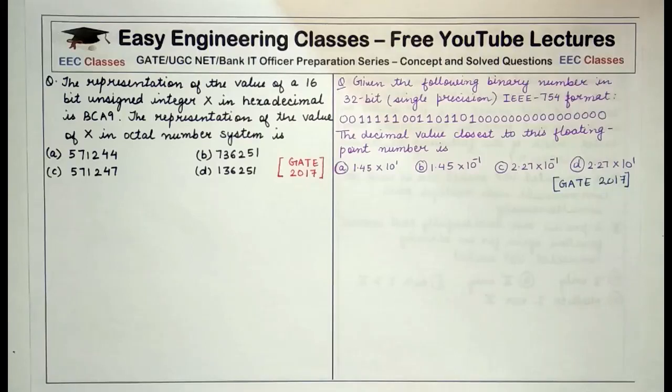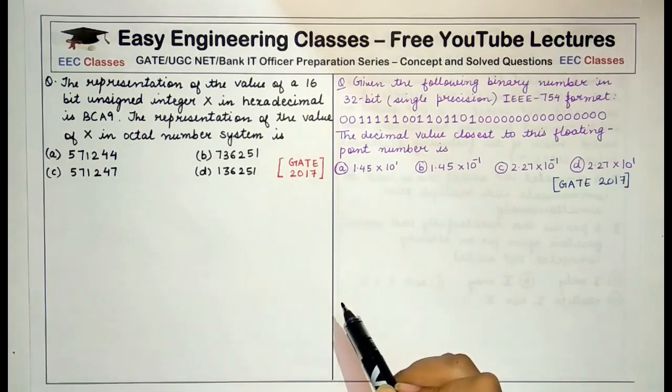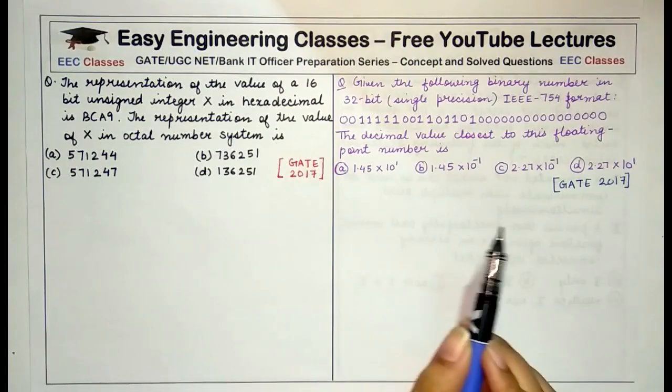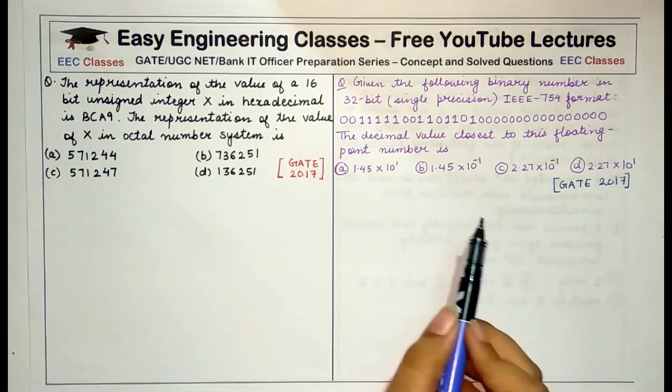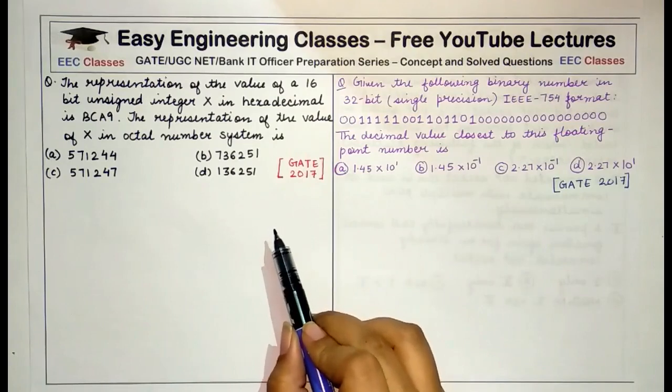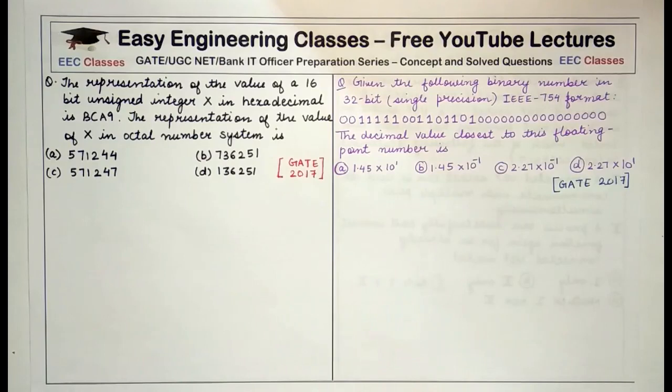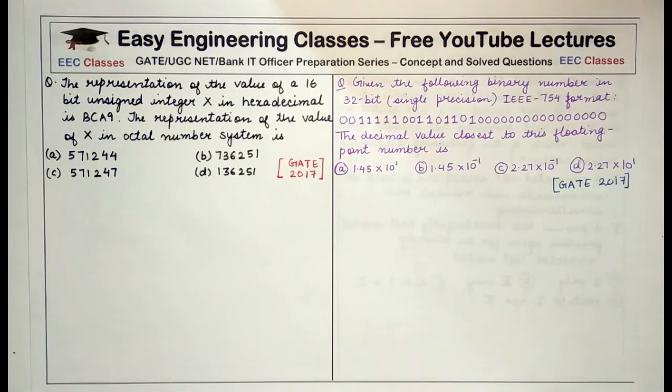Hello everyone, welcome to Easy Engineering Classes. In this lecture we'll be studying previous year GATE 2017 questions on two basic topics of digital logic: IEEE 754 format for representing floating point numbers, and hexadecimal and octal representation of numbers. This will be very useful in the preparation of GATE computer science, UGC NET computer science, and Bank IT professor papers.